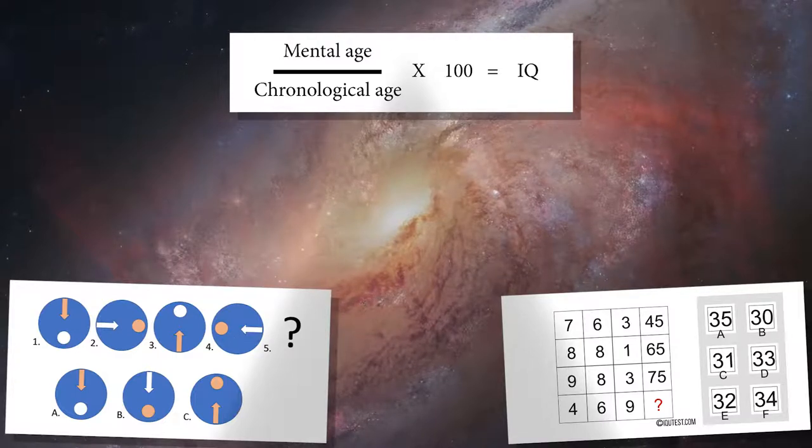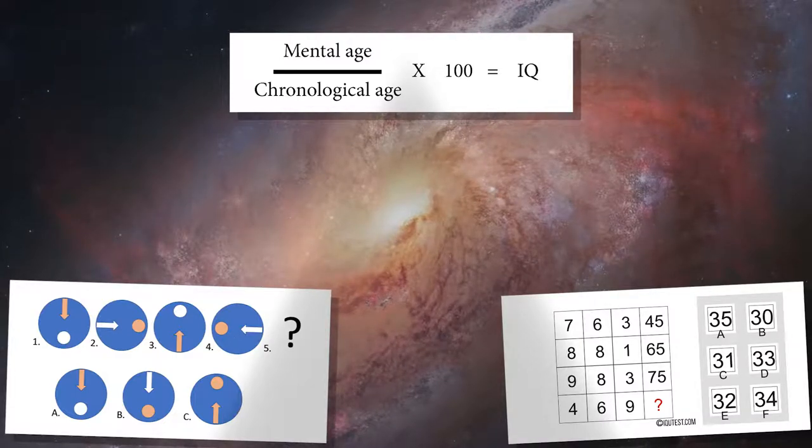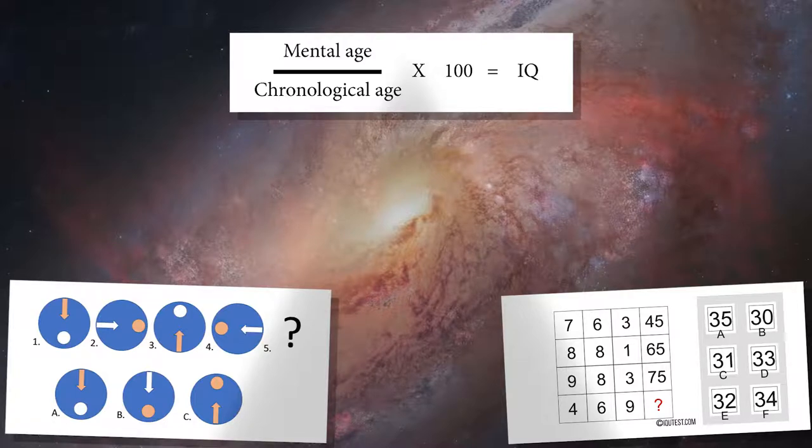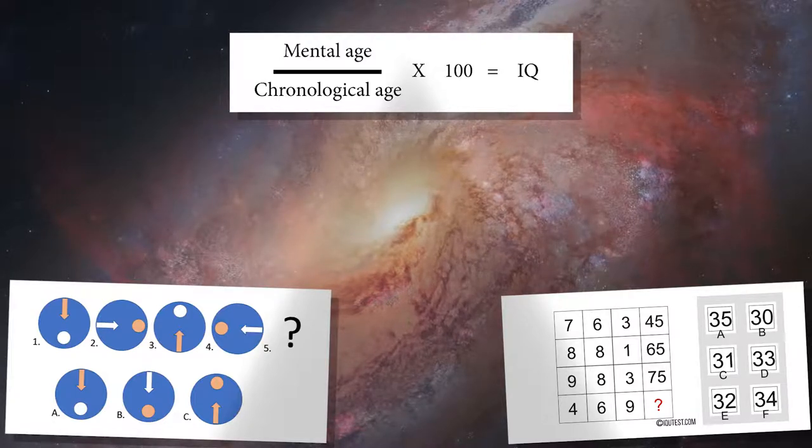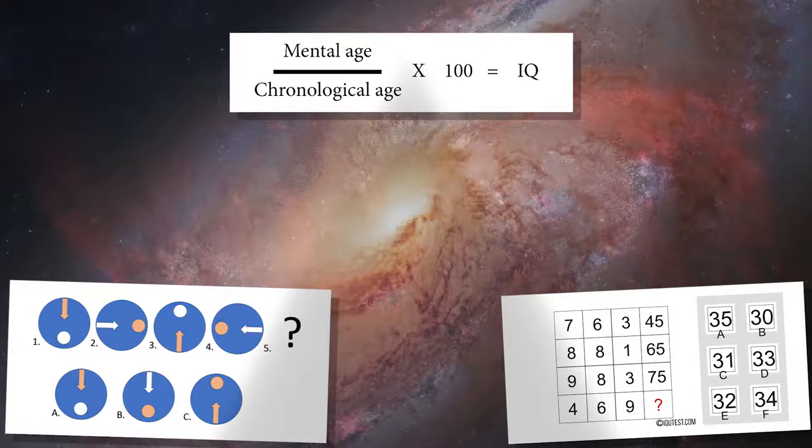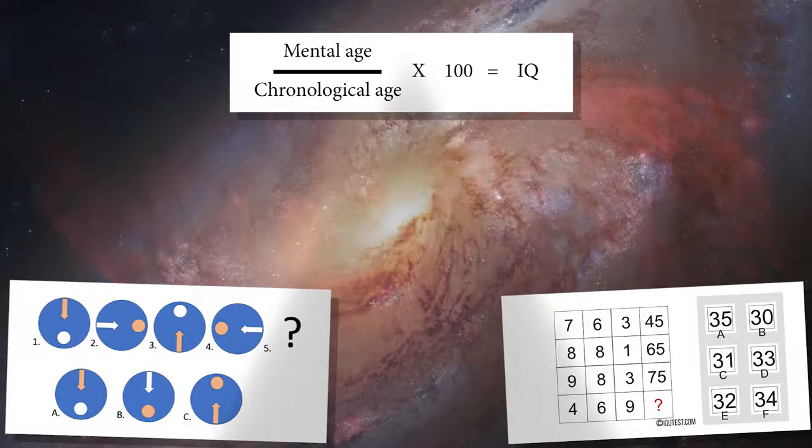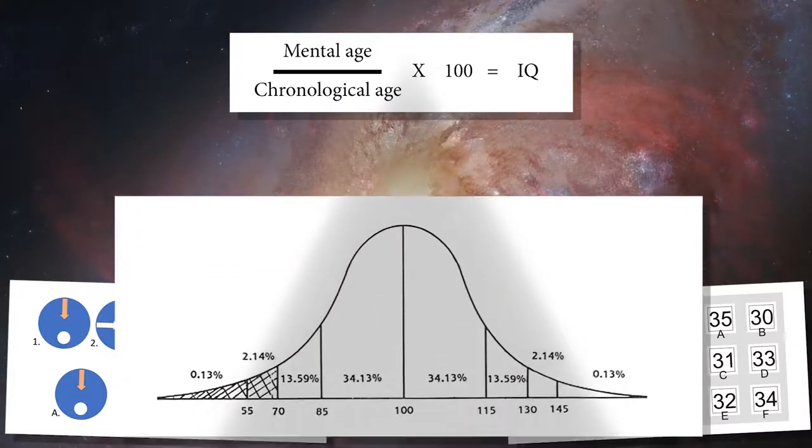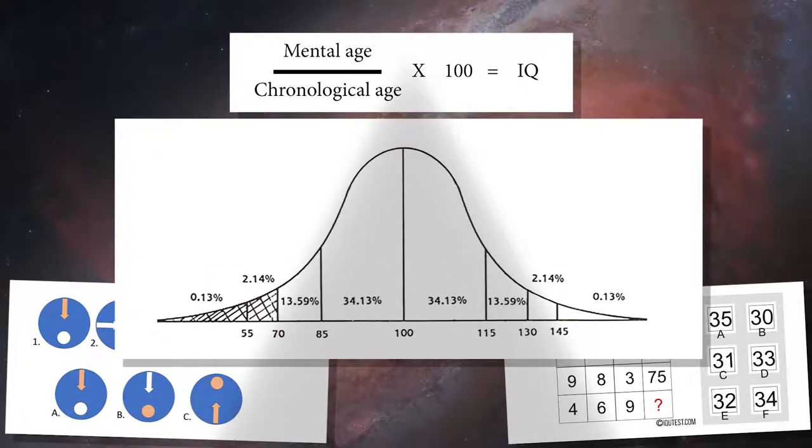However, it's completely possible that your mental age is higher or lower than your actual age, and this is precisely what an IQ test measures. The measure of human IQ is measured in a bell-shaped graph. In psychology, this is known as a standard deviation. As you can see, the average median for IQ is sitting at 100, which means the average human has an IQ of 100.